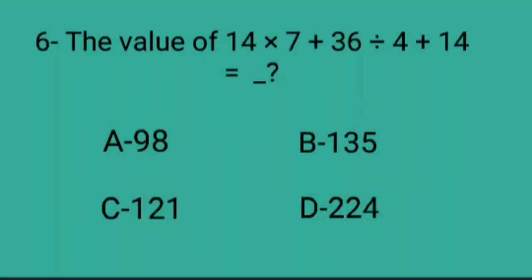Q6. The value of 14 into 7 plus 36 divided by 4 plus 14 is equal to? A. 98, B. 135, C. 121, D. 224.